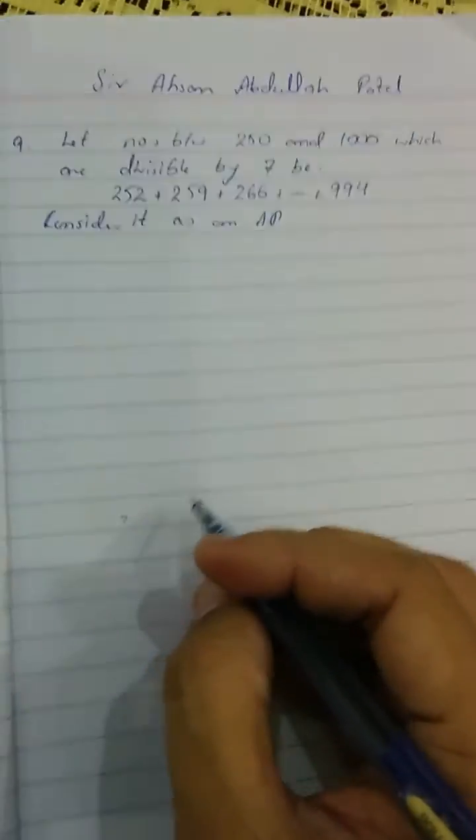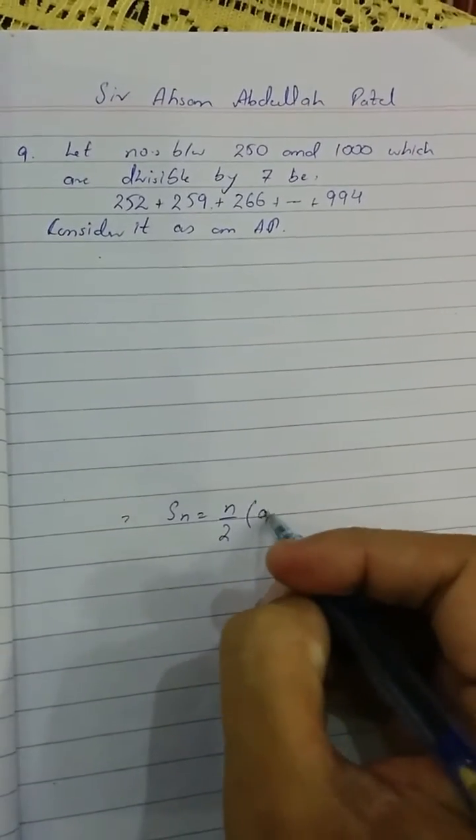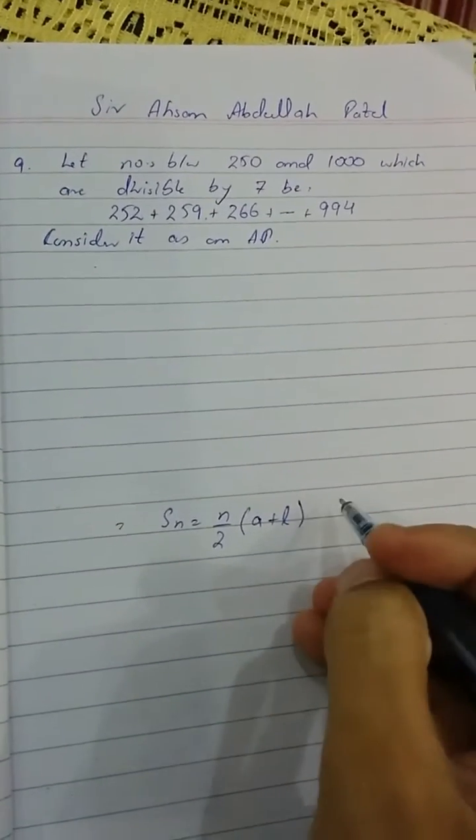Now if I want to find the sum, the formula as you know is Sn = n/2(a + l).